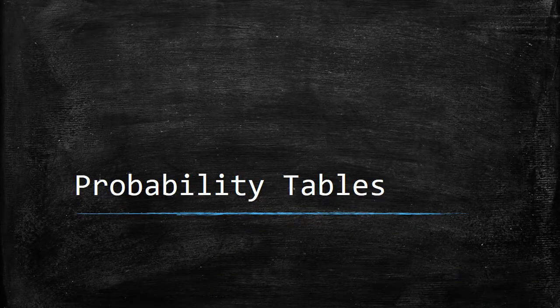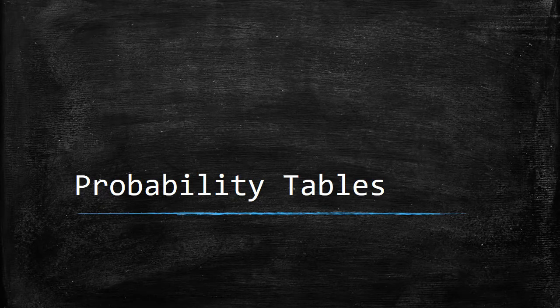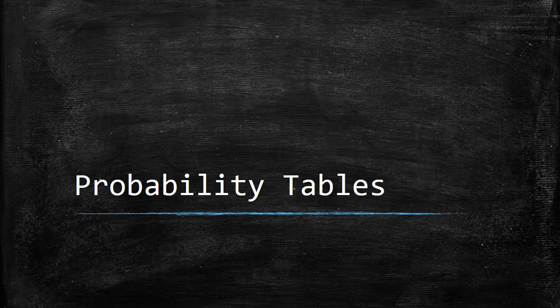In the last video, we took a look at probability trees and how we can use those to determine the likelihood of an event occurring, the probability of something happening. We're going to look at a different way to do that, and this method is called a probability table.